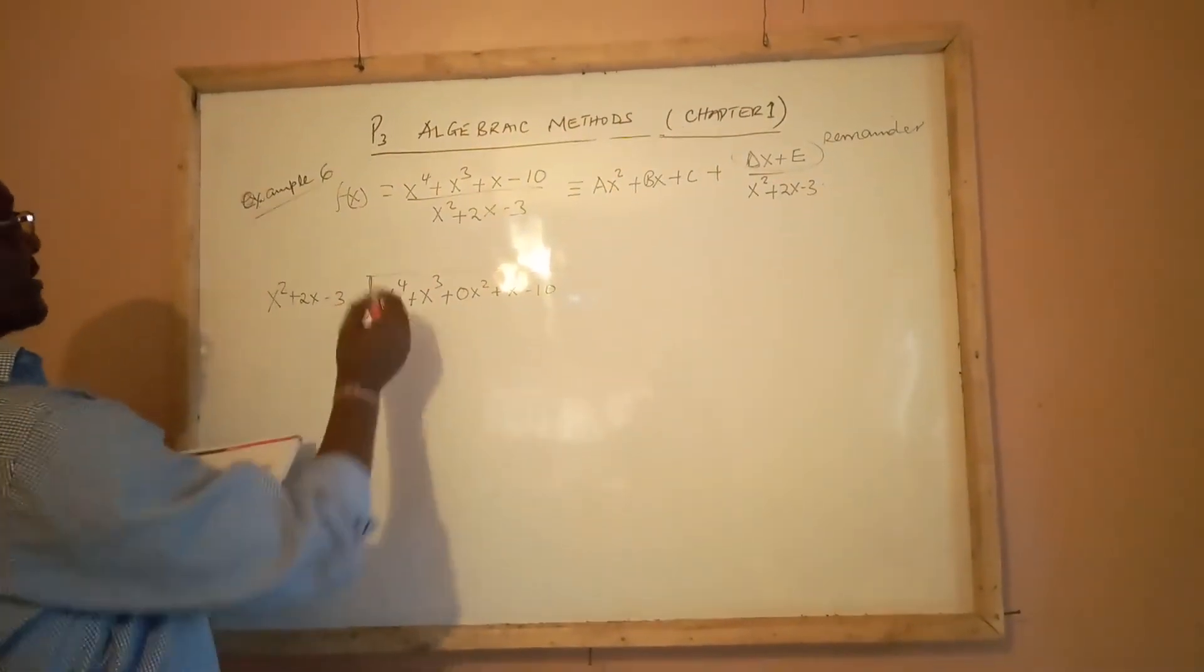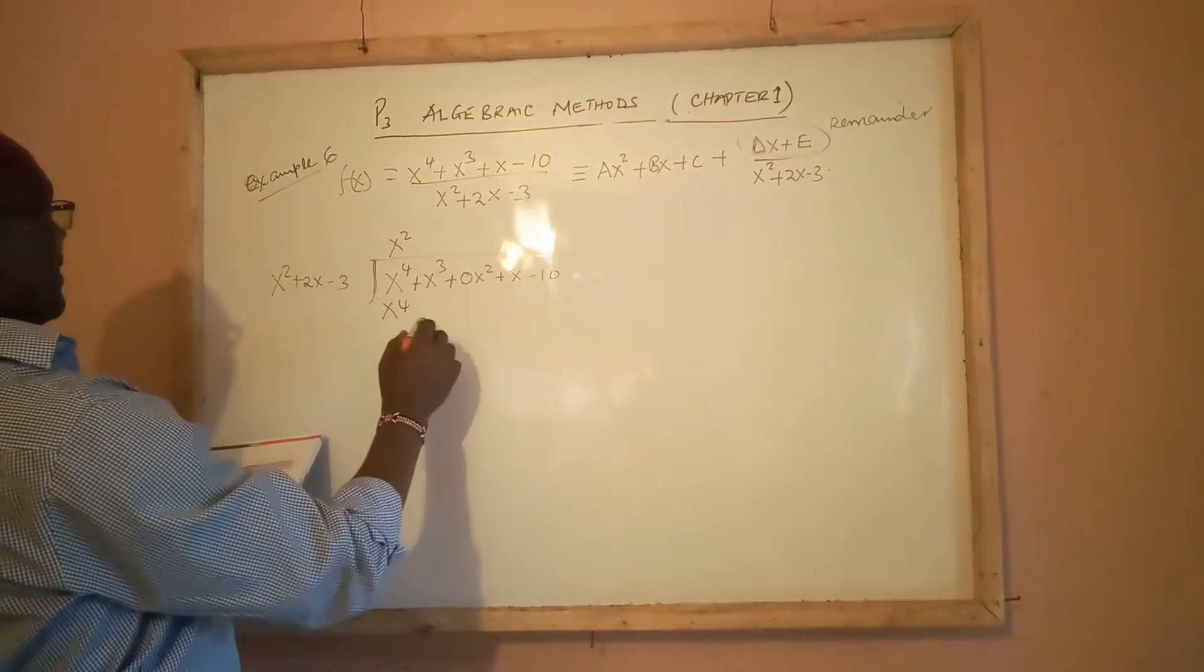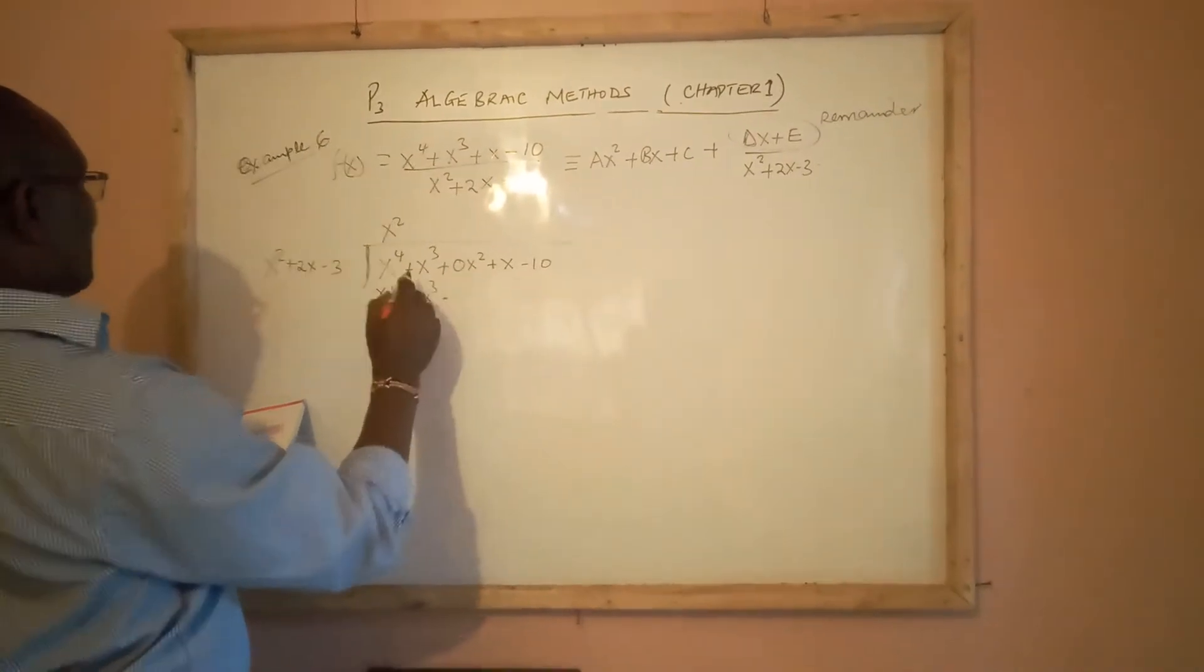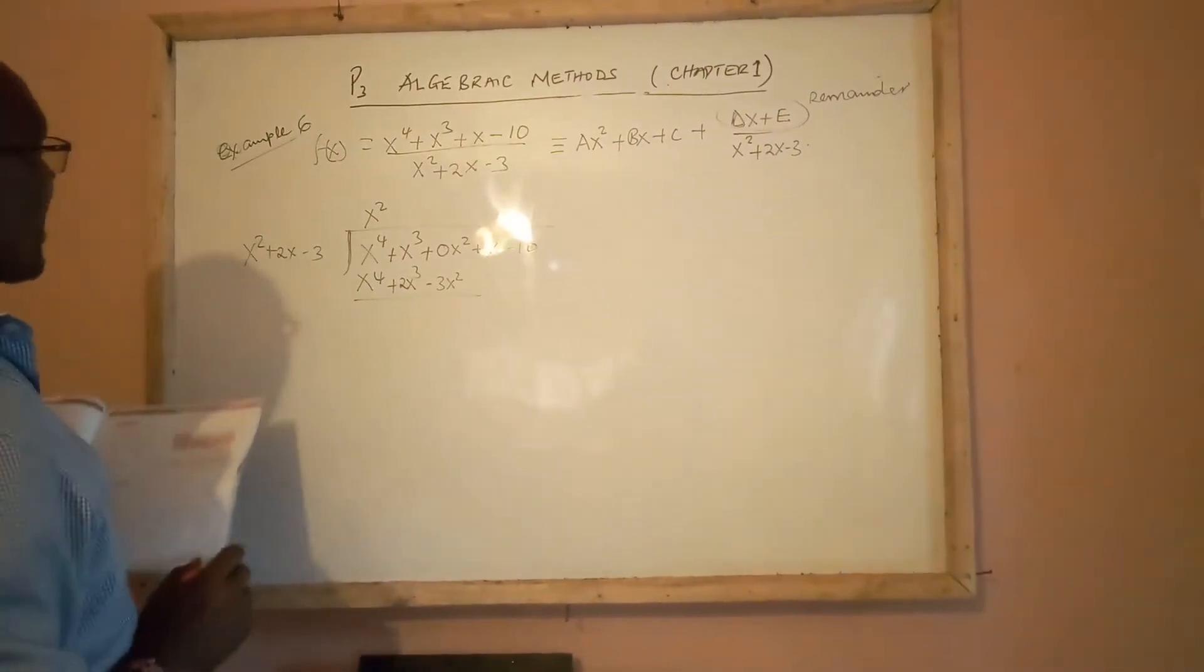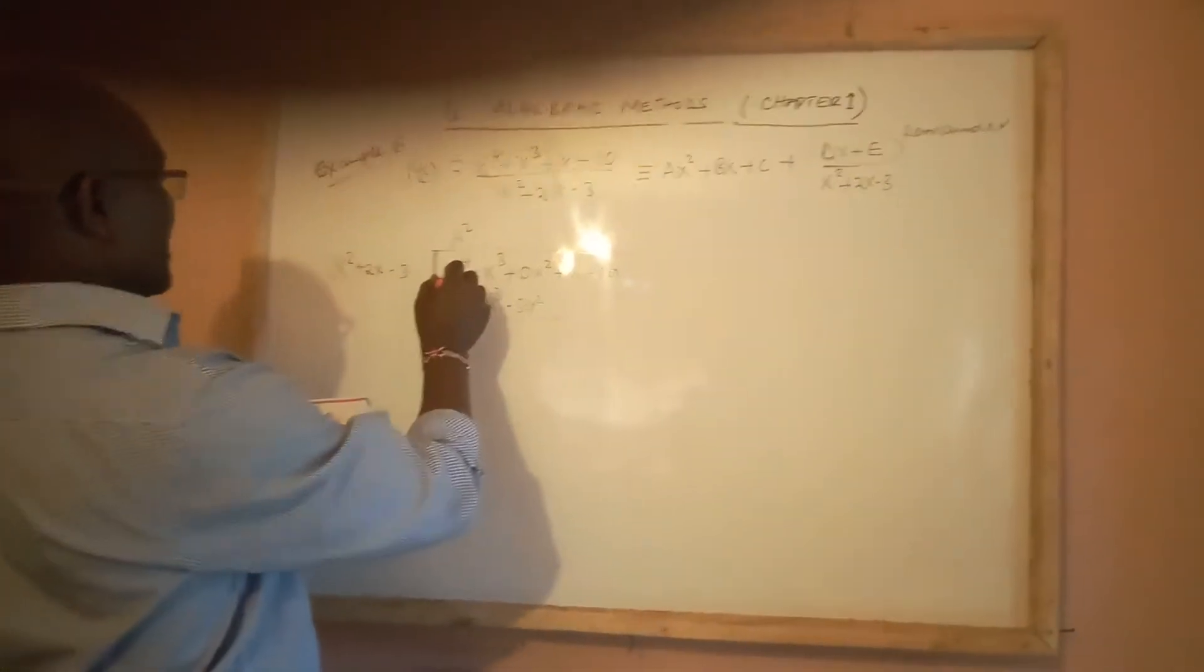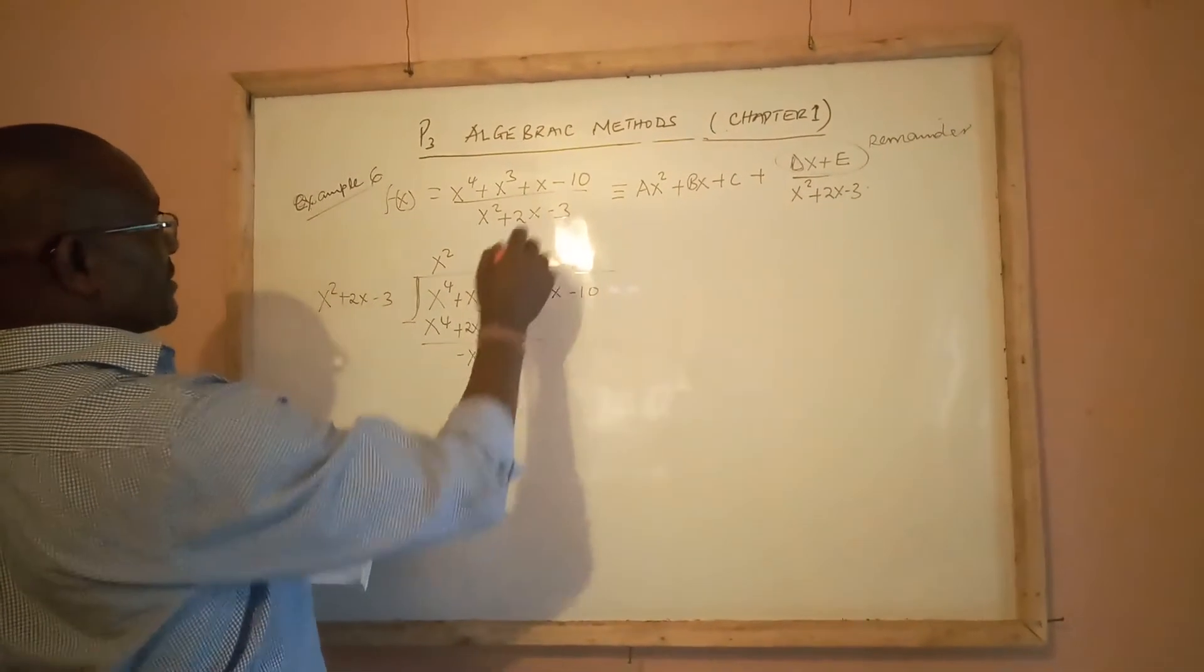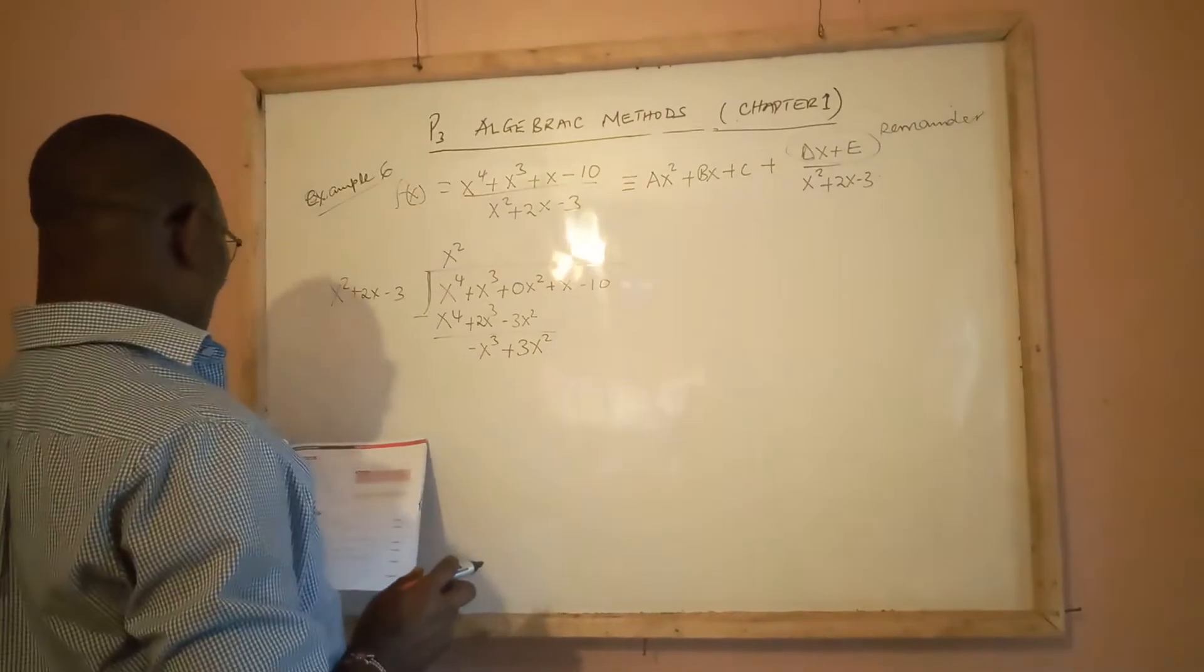So, x^4 divided by x^2 is, of course, x^2. This x^2 multiplied by the whole divisor, we have x^4 + 2x^3 - 3x^2. Then you subtract: x^4 cancel out, x^4 - 2x^3, of course we have -x^3. 0x^2 minus negative 3x^2, we have positive 3x^2.